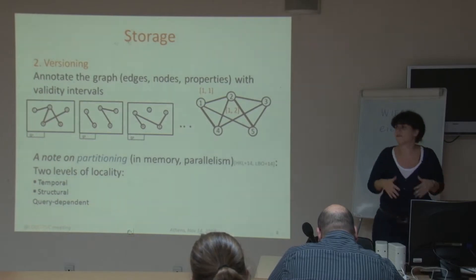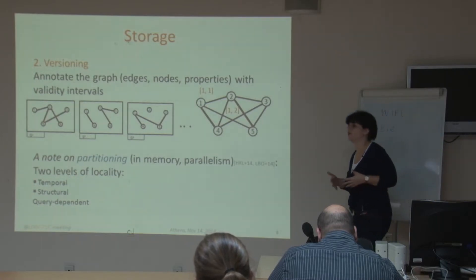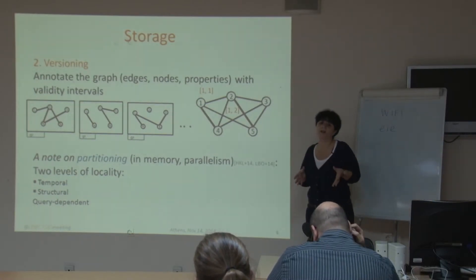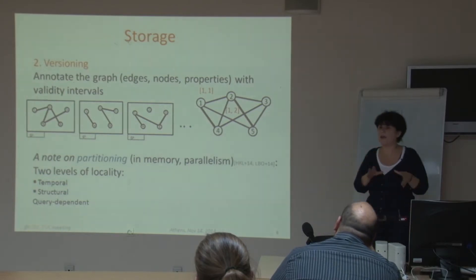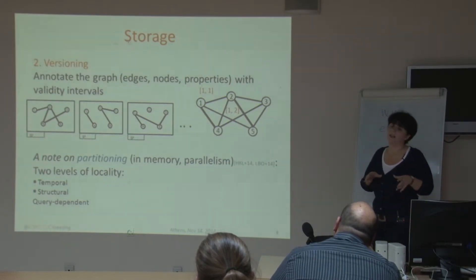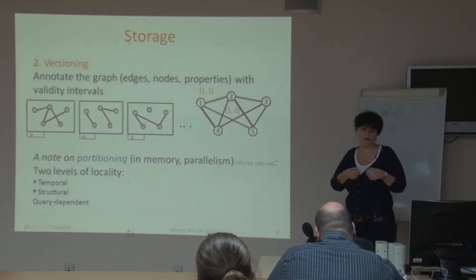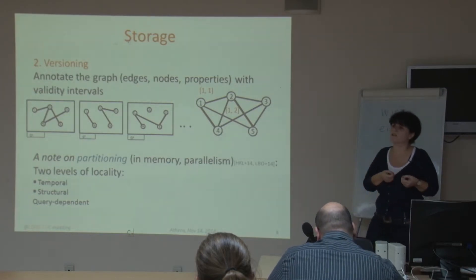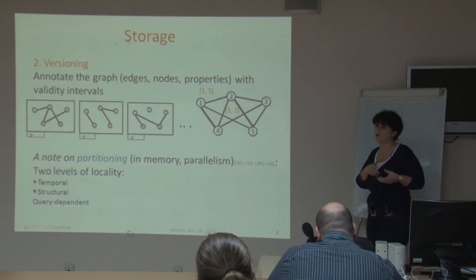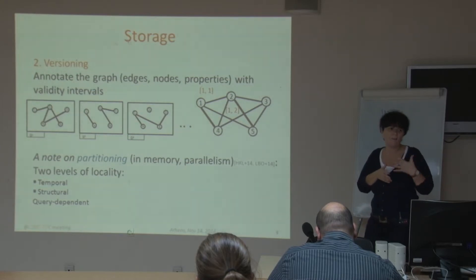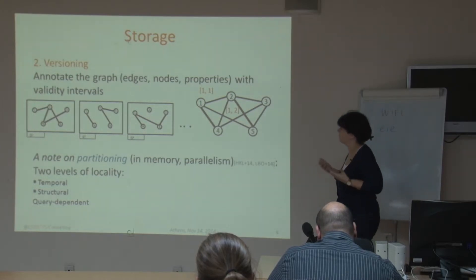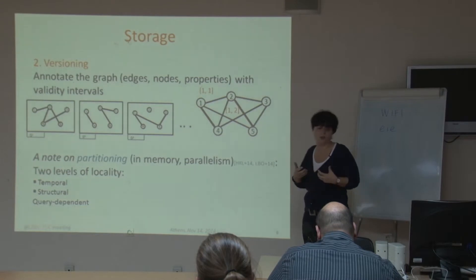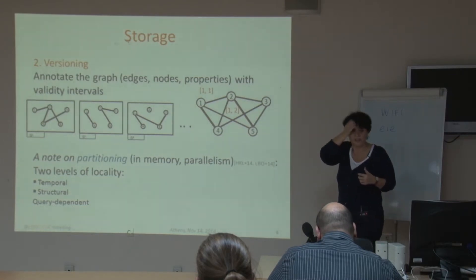The second approach is a versioning approach. You store the union graph — the graph that involves all nodes and all edges — and then you do versioning. You annotate all elements — nodes, edges, properties — with validity intervals. Again, there are many issues: these graphs get very large, and there are challenges around how to store and process them.